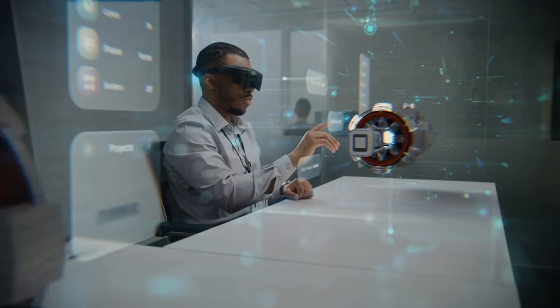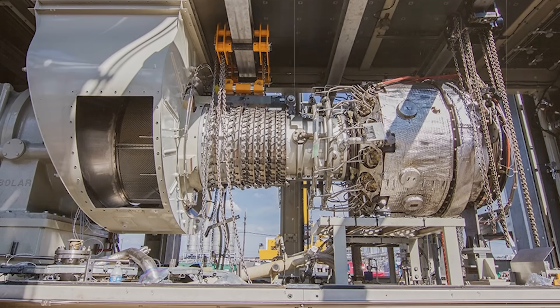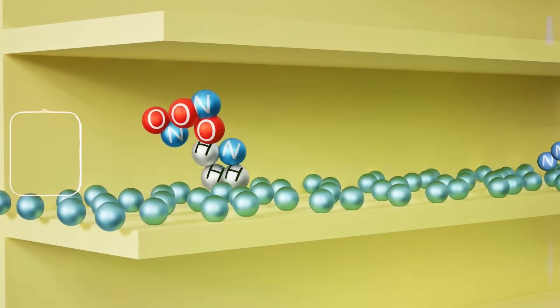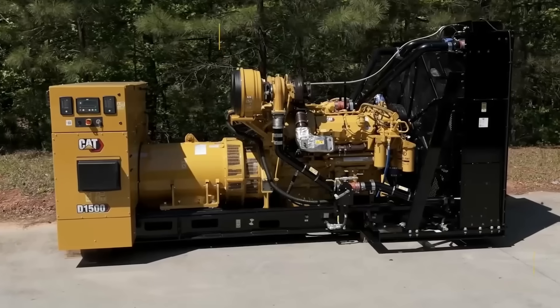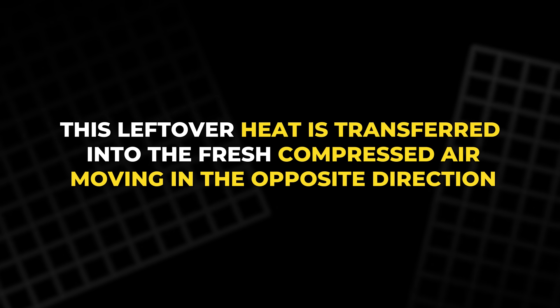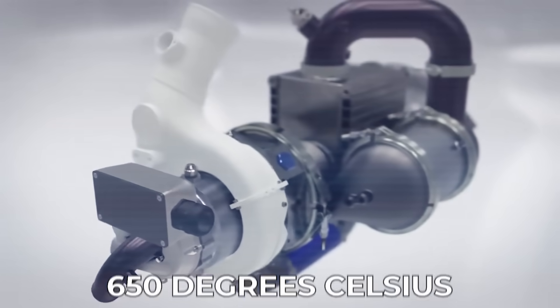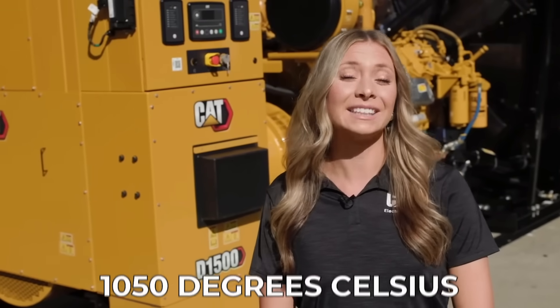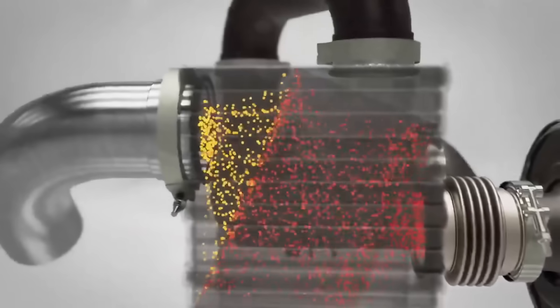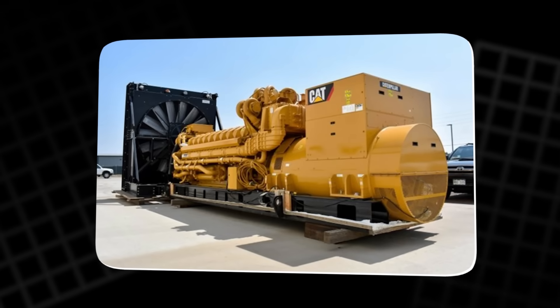As the hot gases leave the turbine, they still hold a large amount of energy. Even after turning the turbine at high speed, they are far from cool. In traditional systems, this leftover heat would leave through the exhaust, creating wasted energy. In the CAT-Gen, the gases pass back into the recuperator. Inside the recuperator, this leftover heat is transferred into the fresh, compressed air moving in the opposite direction. This raises the temperature of the incoming air from about 650 degrees Celsius to near the full reaction temperature of 1050 degrees Celsius. Because so much heat is reclaimed, the fuel only needs to provide half the energy needed to reach the catalytic reaction temperature. This is one of the main reasons CAT-Gen is so efficient. It uses energy that would normally be thrown away.